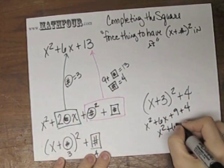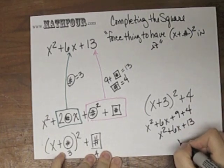x squared plus 6x is 13. And there it is. Big check mark.